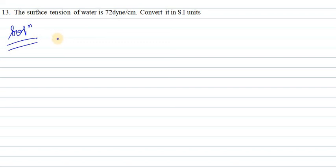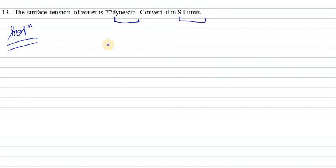Let's start with question number 13. It says the surface tension of water is 72 dyne per centimeter — convert it into SI units. So we have surface tension of water that is 72 dyne per centimeter. This is the CGS unit and we need to convert it into SI unit.